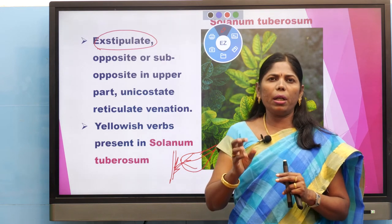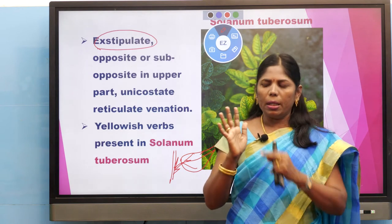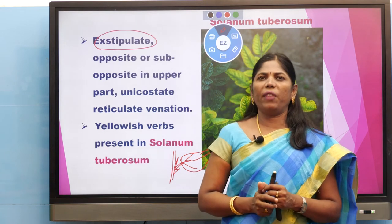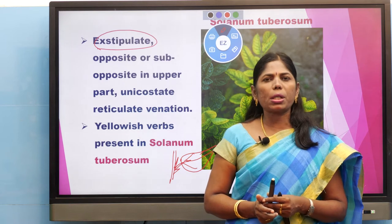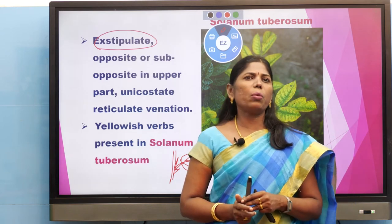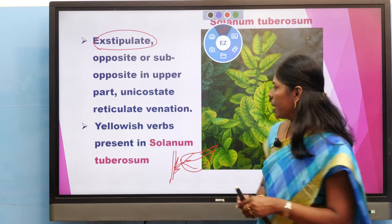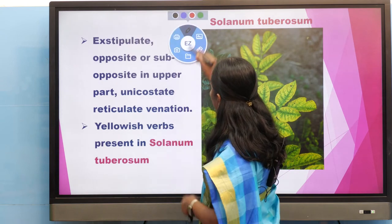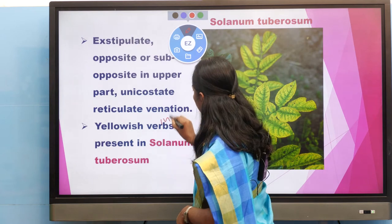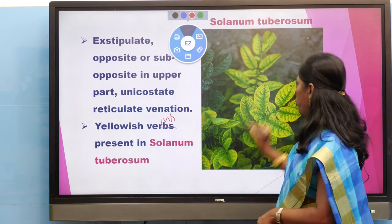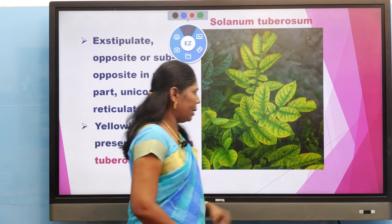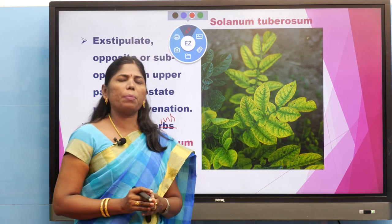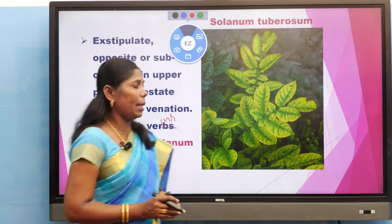In multicostate reticulate venation the veins spread over like a palm — already studied in types of venation. Here in Solanaceae it is unicostate reticulate venation. Yellowish veins are visible in Solanum tuberosum of the family Solanaceae.